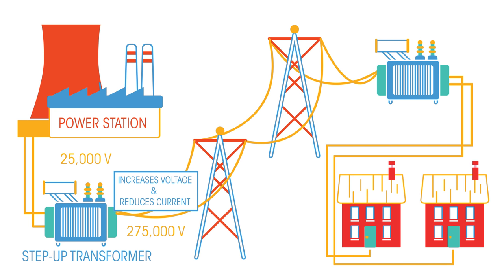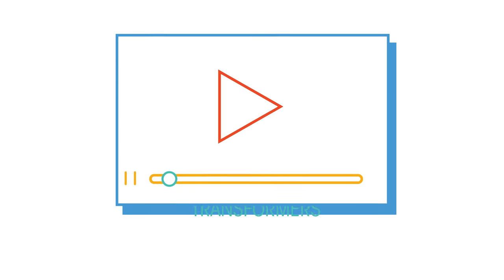Before the electricity gets to our homes, the voltage needs to be reduced back down to a safe level. The electricity therefore passes through a step-down transformer. To learn how transformers work, watch this video.